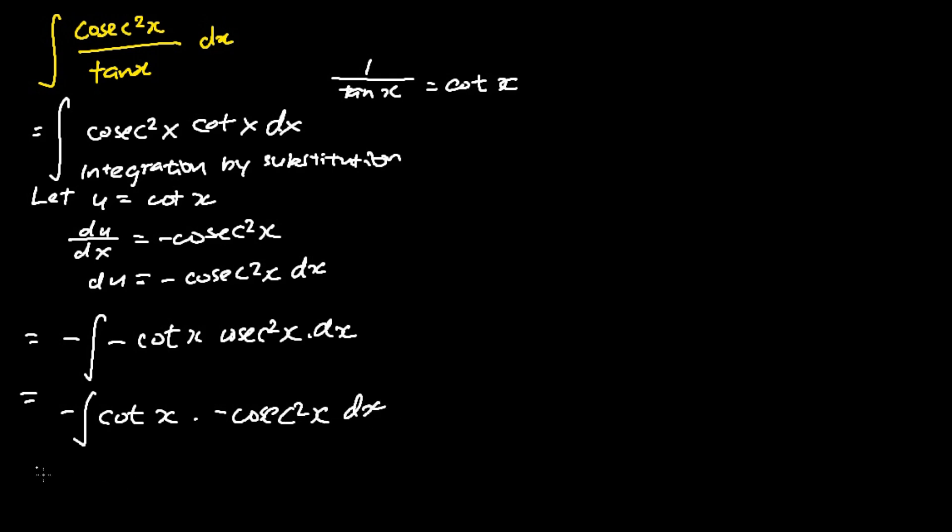And I apply integration by substitution. My negative cosecant square x dx is du, my cotangent x is just u. So I'm basically integrating u du. This equals the negative of u squared over 2 plus c.